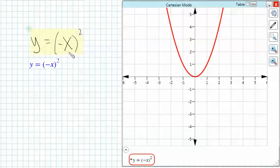and we can verify that algebraically, because negative x squared is the same as x squared.